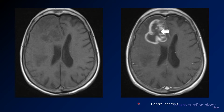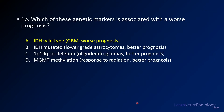Other things that might cross your mind include a metastatic focus. Lymphoma can look like this, but it's rare to have that much central necrosis. When thinking about which genetic marker is associated with the worst prognosis, that is IDH wild type — the classic GBMs with a poor prognosis. IDH mutation is associated with lower grade astrocytomas and oligodendrogliomas and has a better prognosis. 1p19q codeletion is the key marker for oligodendrogliomas, and MGMT methylation is a marker of response to radiation — both associated with better prognosis. So IDH wild type is the only one associated with a worse prognosis.